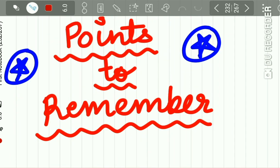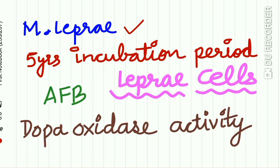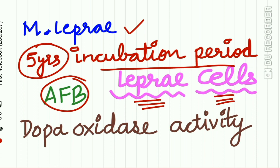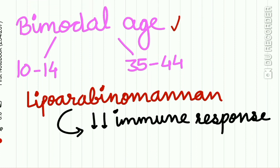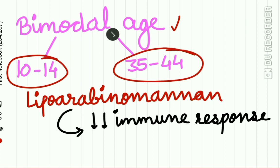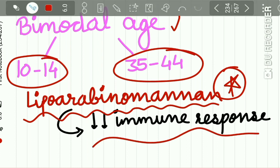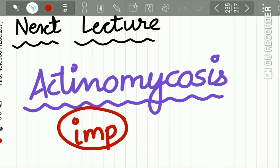Key points to remember in leprosy: the causative organism is M. leprae with an incubation period of five years; it is acid-fast with characteristic lepra cells or foamy macrophages in lesions; it exhibits dopa oxidase activity; bimodal age distribution peaks at 10–14 years and 35–44 years; and the lipoarabinomannan component of M. leprae's cell membrane reduces the patient's immunity.